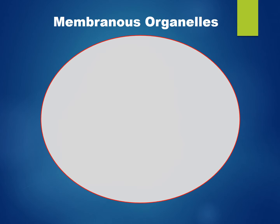The following organelles discussed are membrane-bound organelles. The nucleus stores the genetic material, DNA, and is also where ribosomal RNA is produced.